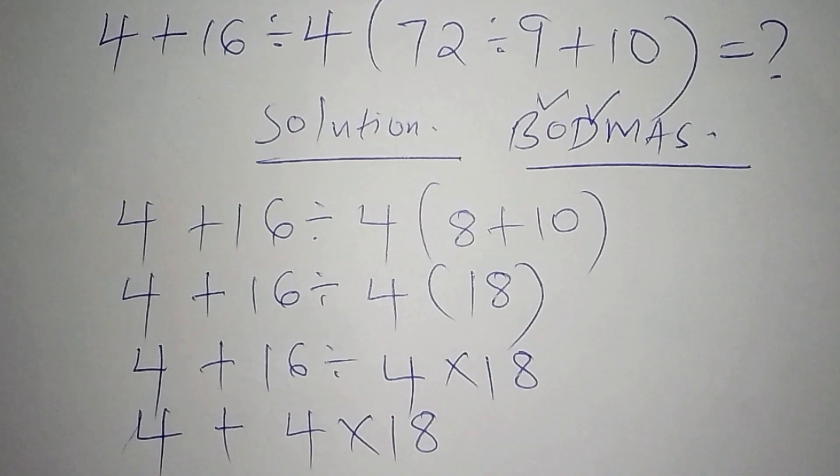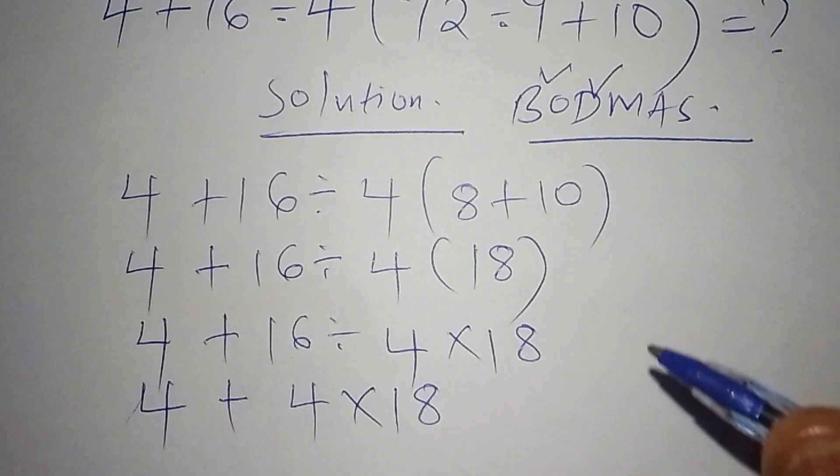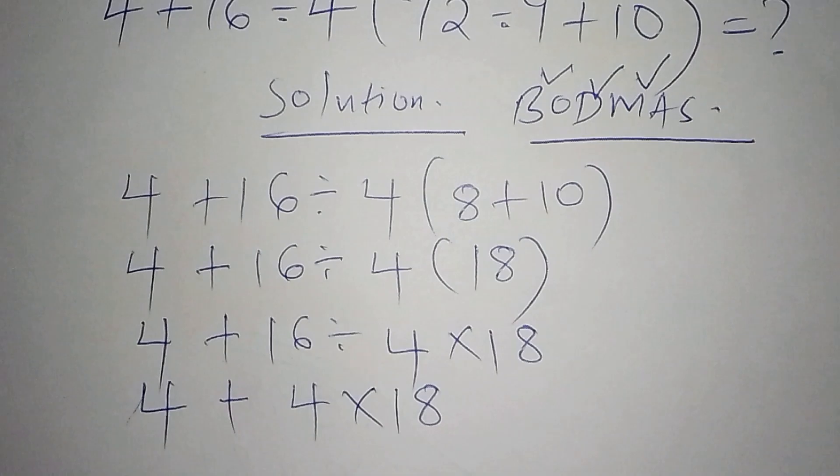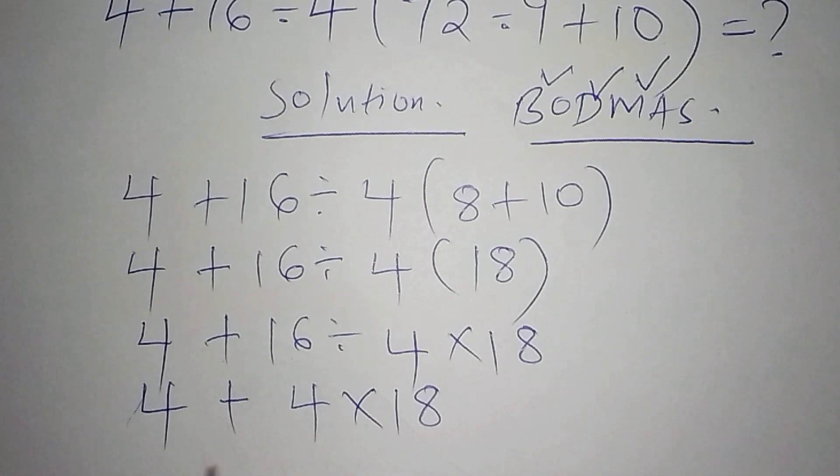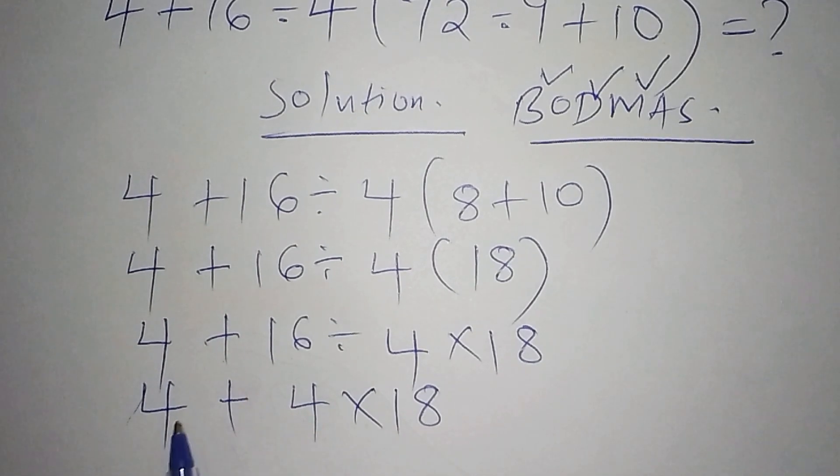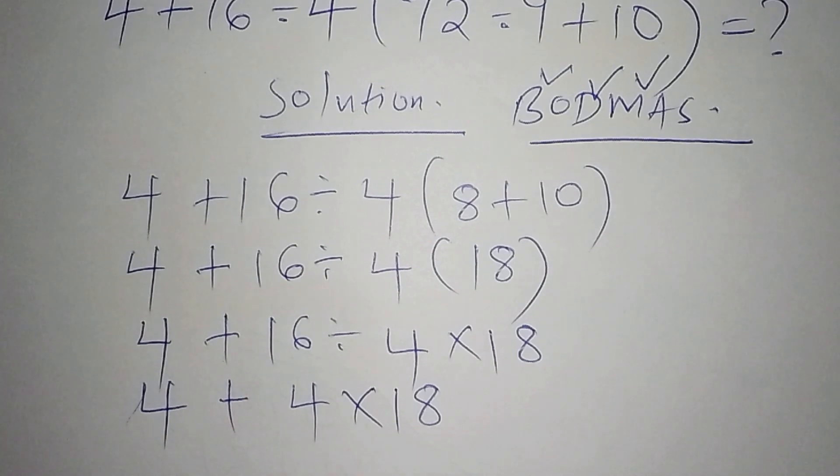After we reach that step, we now move to M, which stands for multiplication. Be very careful at this stage, because when you work out 4 + 4, this is where majority of us make a mistake by working out 4 + 4 = 8, then multiplying 8 × 18. You'll end up with the wrong answer because you haven't observed the order of operations. That's the biggest mistake we make.